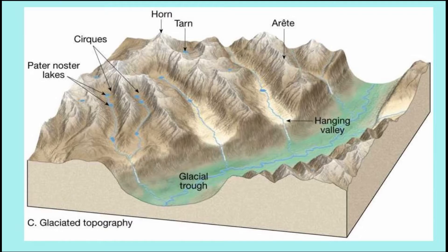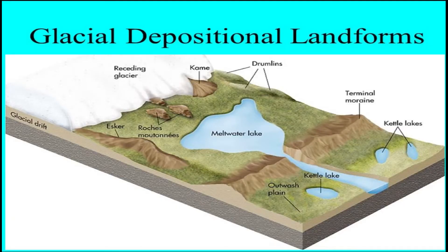Looking at this diagram, we can see the erosion features: the cirque, the horn known as the pyramidal peak, the tarn, the arêtes with their knife-edge shape, and the glacial troughs with hanging valleys. Moving further down, we see the glacial depositional landforms — drumlins, the receding glacier forming features, eskers, kettle lakes, and the terminal moraine around these areas.